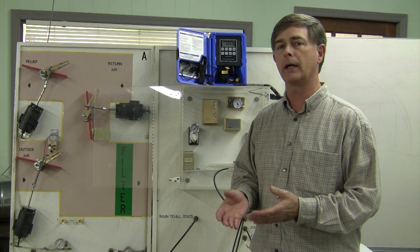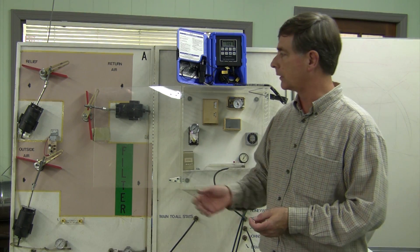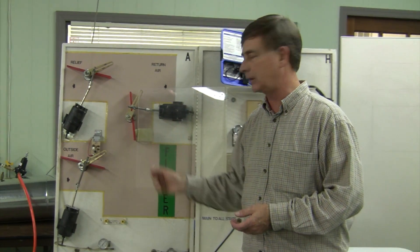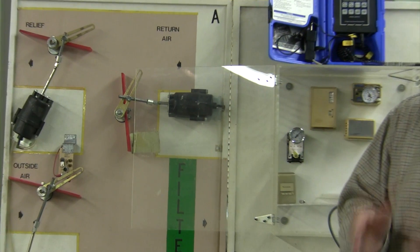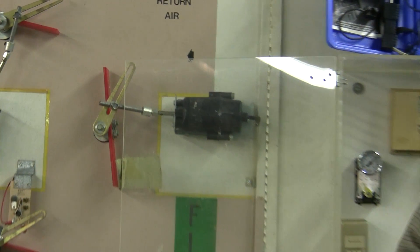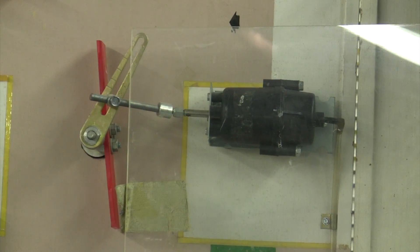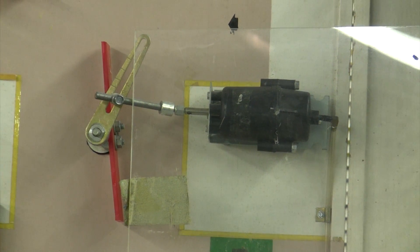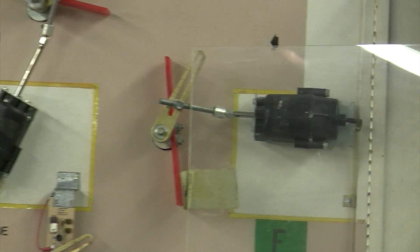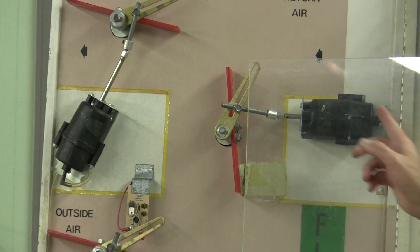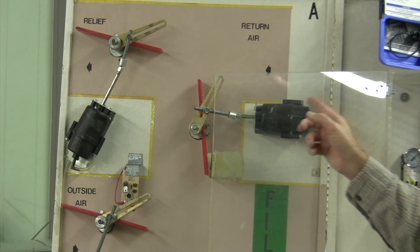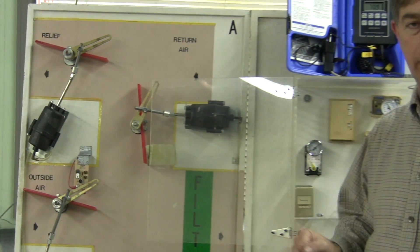We have to look at our actuator. If we look at an actuator that has a stroke of eight to thirteen PSI, then what we want to do is calibrate to mid-stroke of that actuator. So if you have a three to eight actuator, you're gonna have a very different calibration pressure. Check your actuator, find the spring range. In this case we have eight to thirteen.